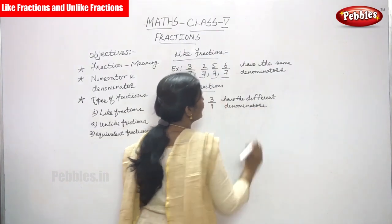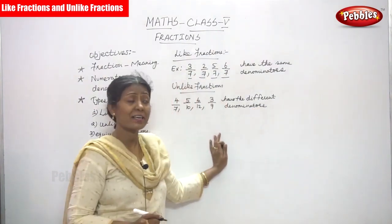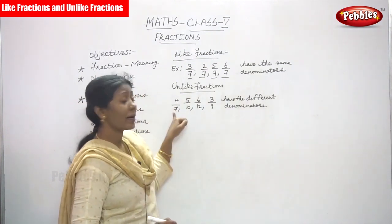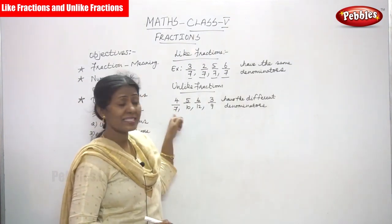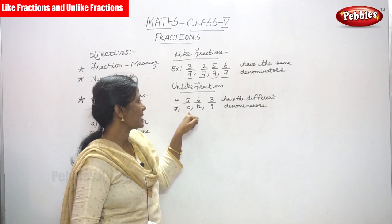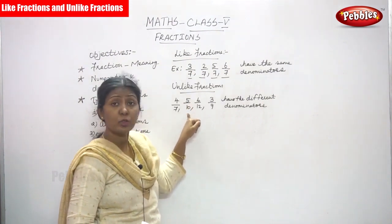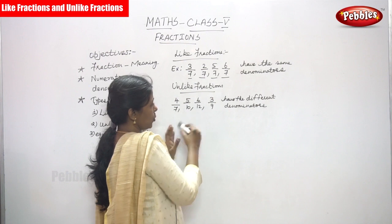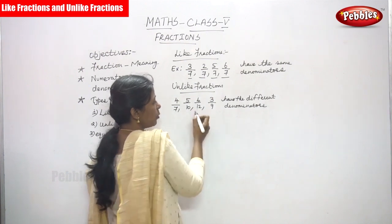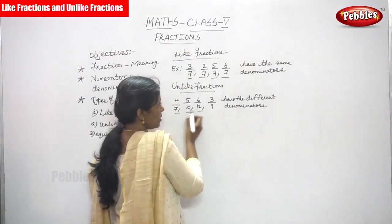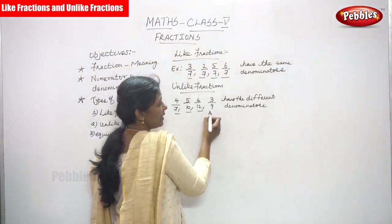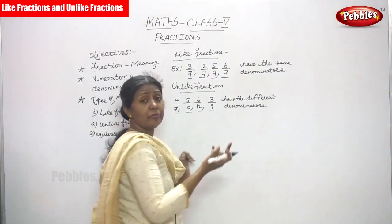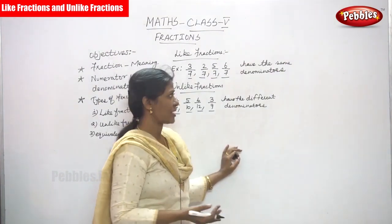Have the different denominators — it is called as unlike fractions. For example: 4 by 7, the denominator is 7. 5 by 10, the denominator is 10. 6 by 12, the denominator is 12. 3 by 9, the denominator is 9. So all the denominators are different, so it is an unlike fraction.